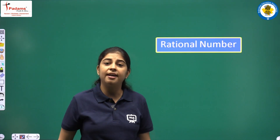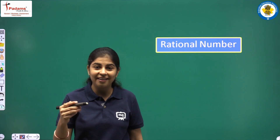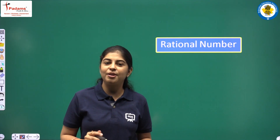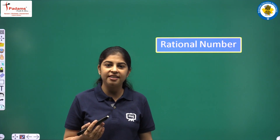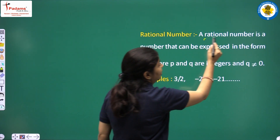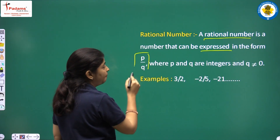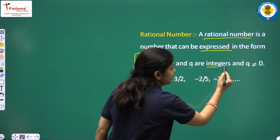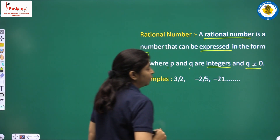The next definition is rational numbers. Rational numbers are numbers that can be written in the form of P upon Q, where P and Q are integers and Q is not equal to 0. A rational number is a number that can be expressed in the form of P/Q, which means in fraction form, where P and Q are integers.